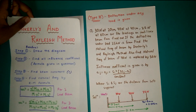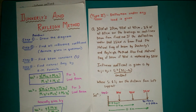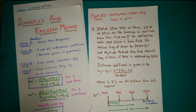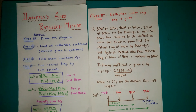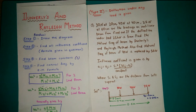Let's understand this properly with the help of a question. This is Type 2 — in Rayleigh's and Dunkerly's there are 3 types of numericals. In Type 2, the deflection under any load will be given — that is, one of Y1, Y2, Y3 will be given. Type 3 contains problems where any one frequency omega_N is given and you have to find the value of C. In this Type 2 question: 30 N at 20 cm, 40 N at 40 cm, 25 N at 60 cm are the loadings on a cantilever beam from the fixed end. If the deflection under load 25 N is 5 mm, find the natural frequency of the beam by Dunkerly's and Rayleigh's method.